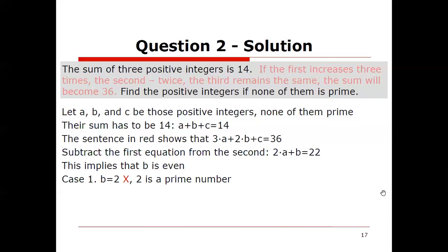Case 1. If b is 2, well, let's see what happens there. That's no good. 2 is a prime number. It's divisible by 1 and it's divisible by itself, which is 2. It's the only even prime number. So that's no good.